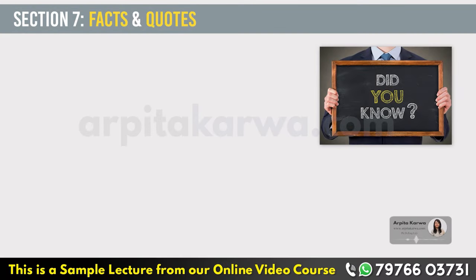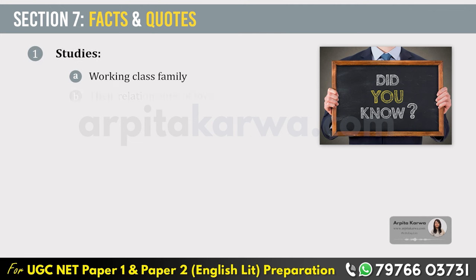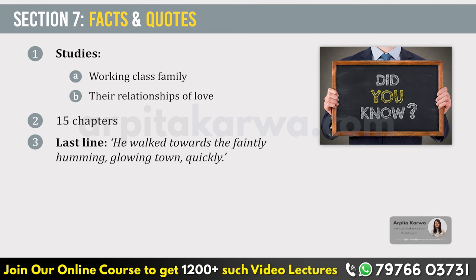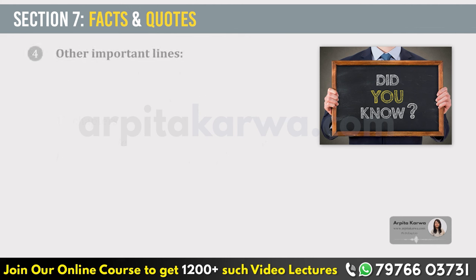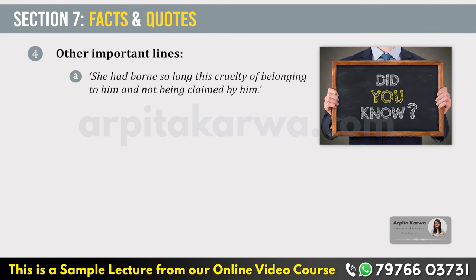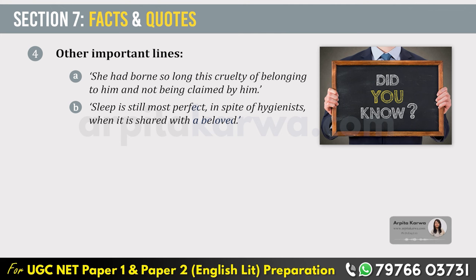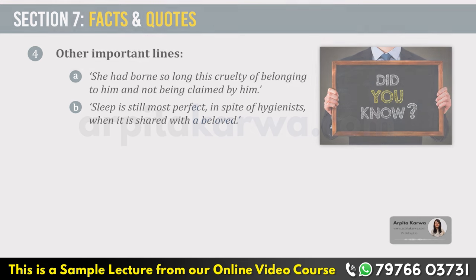Some facts and quotes: In this novel, D.H. Lawrence studied the psychological state of an English working-class family and explored their relationships of love. This is a 15-chapter novel and the last line is: 'He walked towards the faintly humming, glowing town quickly.' Other important lines include: 'She had borne so long this cruelty of belonging to him and not being claimed by him,' and 'Sleep is still most perfect, in spite of hygienists, when it is shared with a beloved.' That's all for this lecture, friends — happy learning, keep loving literature, and stay tuned to arputhakarva.com.